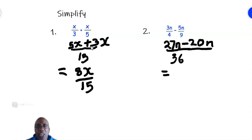Simplify the numerator. 27n minus 20n. That is 7n. And so the answer is 7n over 36.